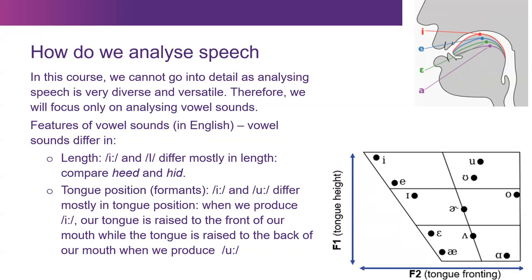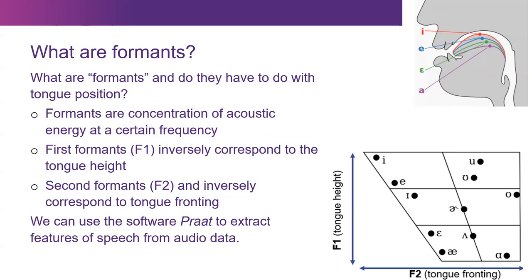Tongue position is really the second important feature. If we look at E and ooh — as in 'heed' and 'hood' — they differ mostly in tongue position. When we produce the E, the tongue is raised at the front of the mouth, while for the ooh sound the tongue is raised at the back. When we produce these sounds, we produce something called formants — concentrations of acoustic energy at certain frequencies. What we do with our tongue is we modulate the sound produced by our vocal folds.